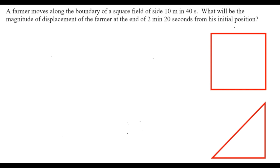A farmer moves along the boundary of a square field of side 10 meters in 40 seconds. I'm taking a square field ABCD where each side is equal to 10 meters, with A as the origin.